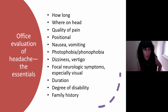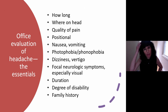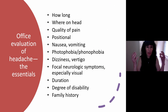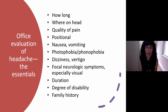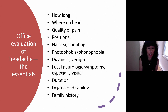Office evaluation of headache — the essential things. How long have you had this headache and where on your head? Visualization is great for this. Quality of the pain — I usually ask people to describe it, then give them choices: stabbing, throbbing, aching, pounding, pressing. People usually select their pain quality. An important question: is it positional? Does it get better lying down or sitting up?